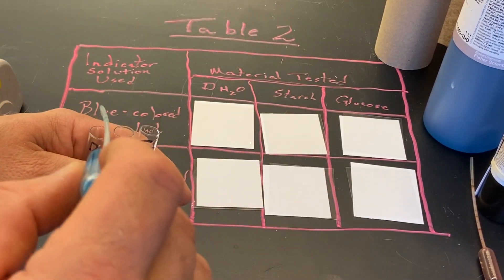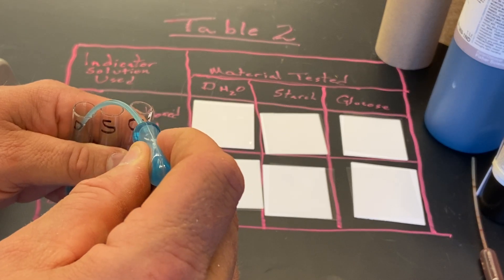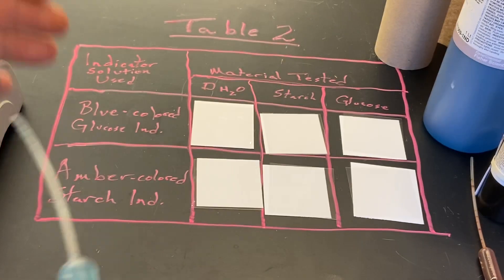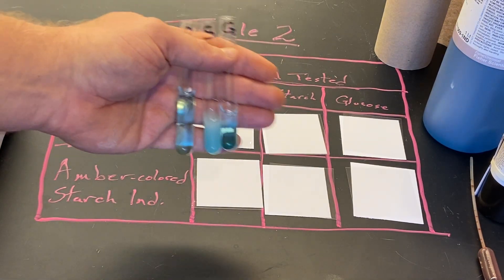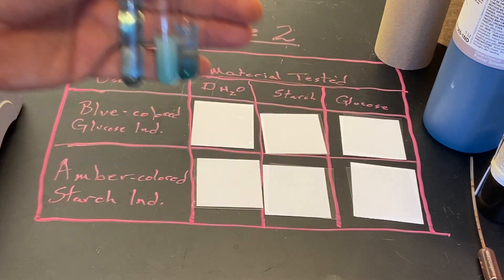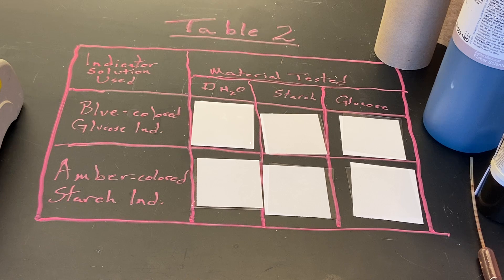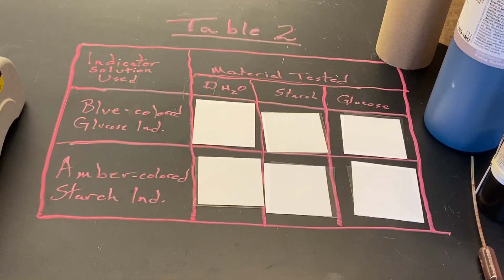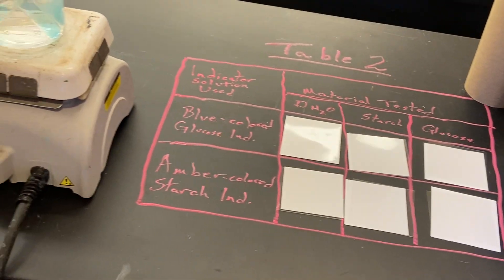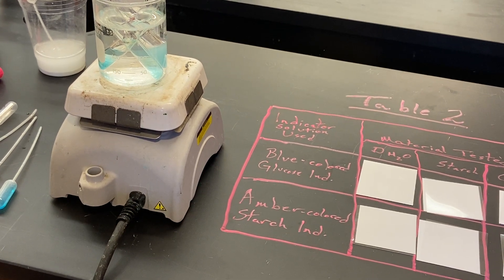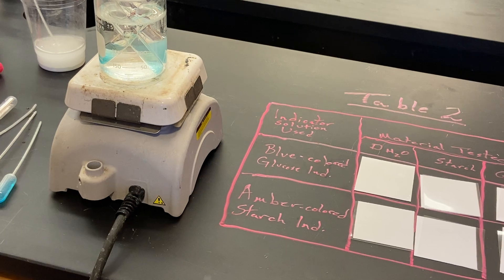You'll see they are light blue. Off to the side I have a hot plate with a beaker, so we're going to put those in there for just a few minutes and let them warm up. We've got a water bath set up and we're going to let those go for about four or five minutes, maybe a little less. If there's glucose present, you'll see an orange or brick red color.